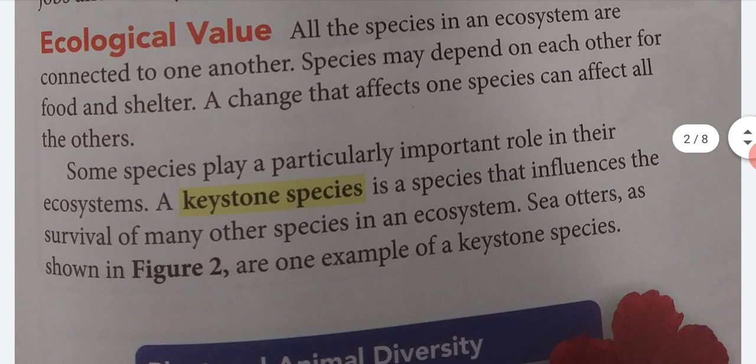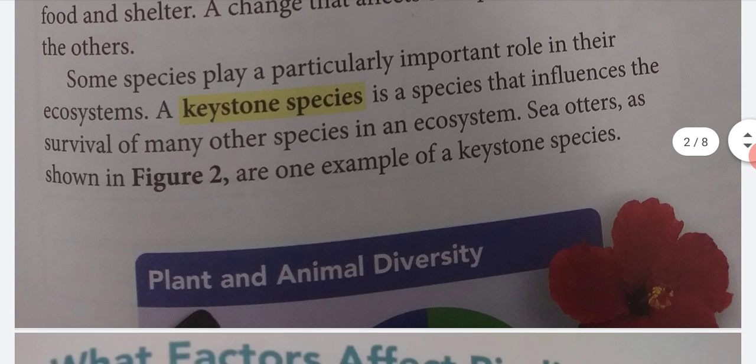Ecological value. All the species in an ecosystem are connected to one another. Species may depend on each other for food and shelter. A change that affects one species can affect all the others. Some species play a particularly important role in their ecosystems. A keystone species is a species that influences the survival of many other species in an ecosystem. Sea otters, as shown in Figure 2, are one example of a keystone species.